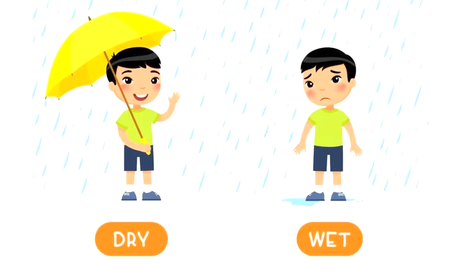Let's see a few examples of wet and dry. In this picture you can see it is raining. The boy with the umbrella is not getting wet — he is dry, because he is using an umbrella. The other boy who doesn't have an umbrella is wet. So the boy with the umbrella is dry and the boy without the umbrella is wet.